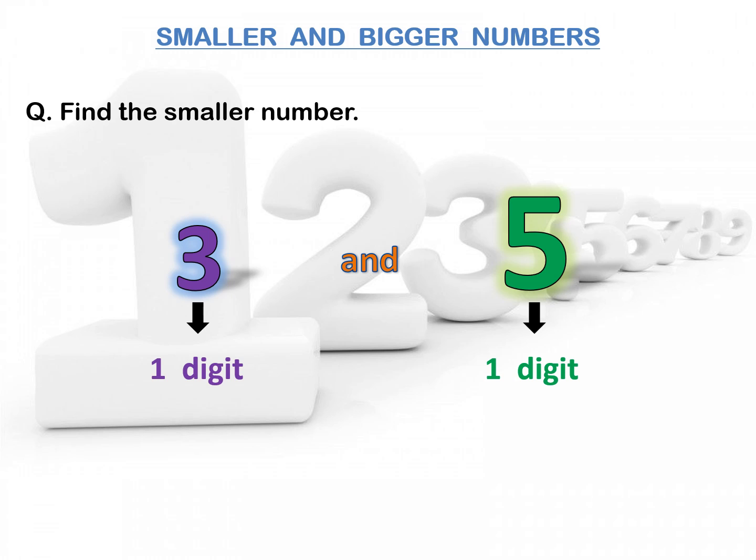So, let us start counting: 1, 2, 3, 4, 5. We have reached both the numbers. While counting, 3 comes before 5. So, here 3 is the smaller number.